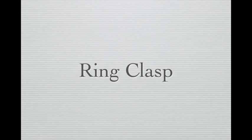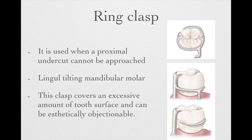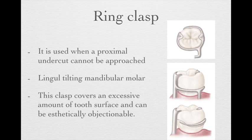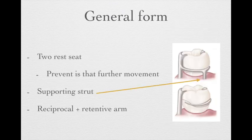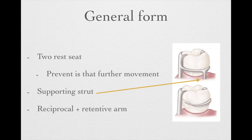Let's talk about variations of the circumferential clasp. We have the ring clasp, used when the proximal undercut cannot be approached, and more likely used with lingually tilted mandibular molars. This clasp covers an excessive amount of tooth surface, so it can be less aesthetic. The standard form for the ring clasp has two rest seats, because the clasp itself is very long — without two rest seats, it would be too flexible and provide poor resistance. It sometimes also comes with a supporting strut.